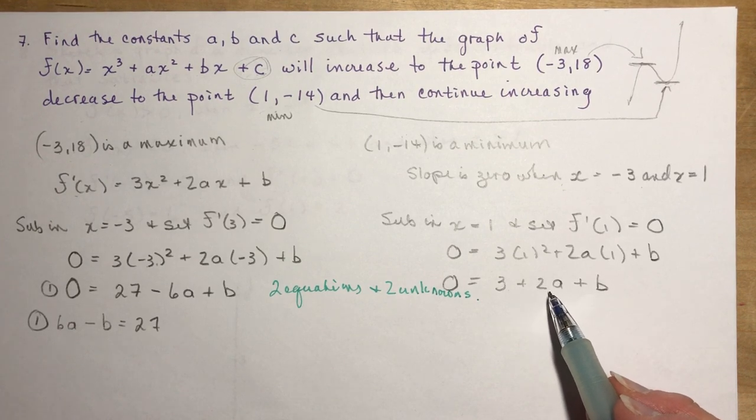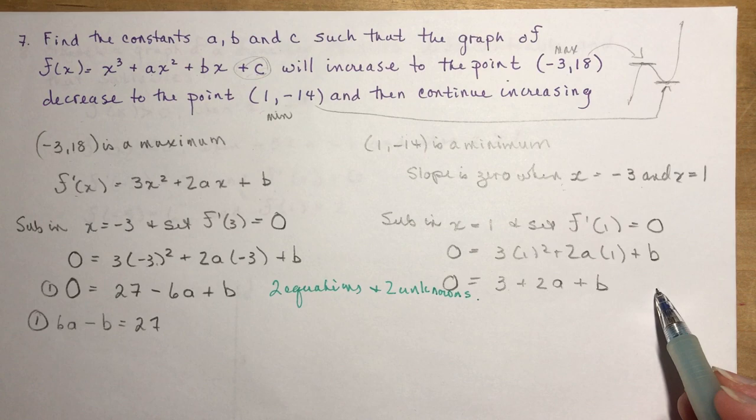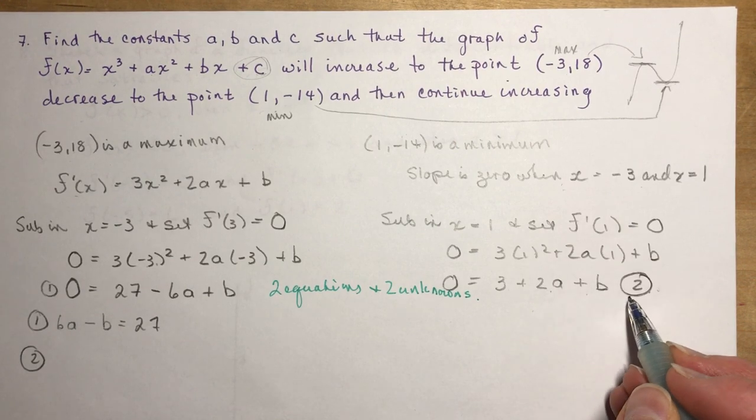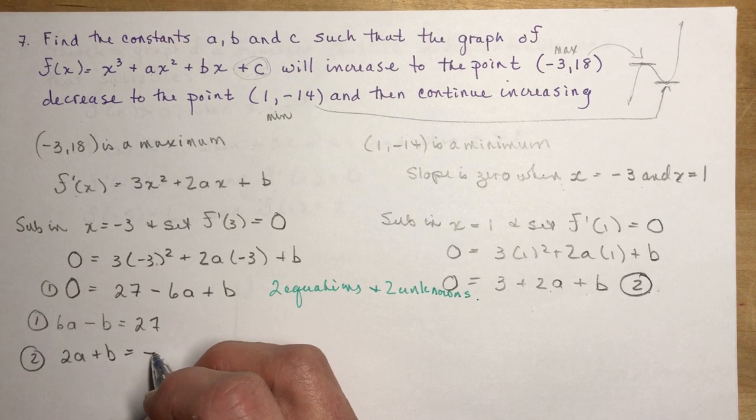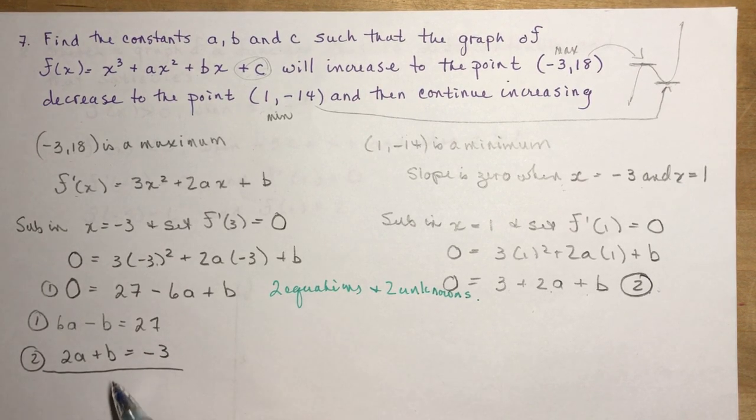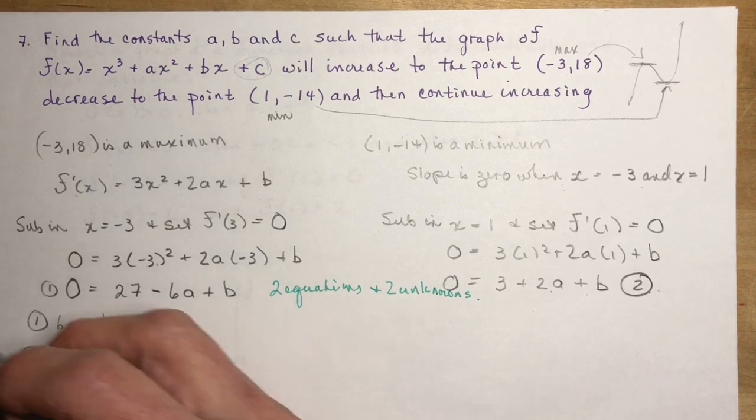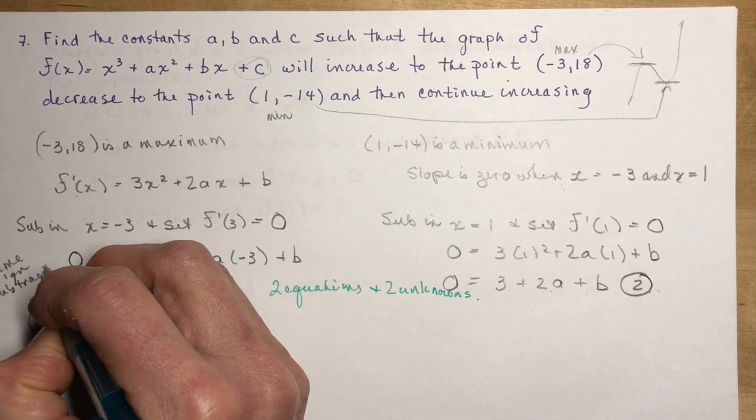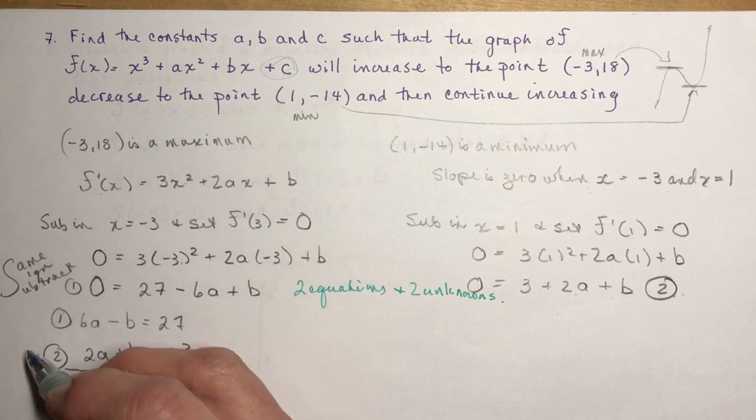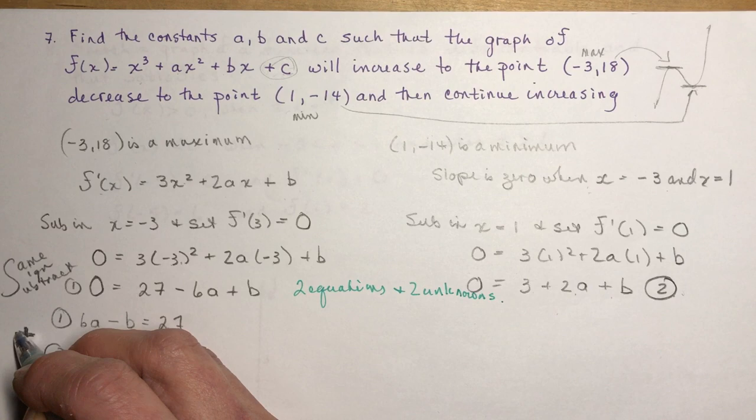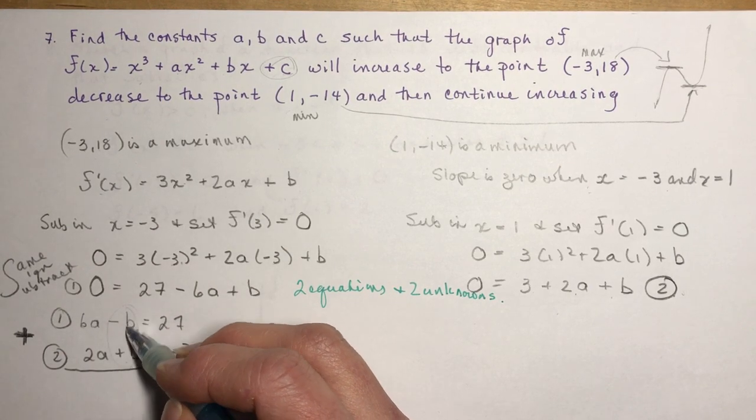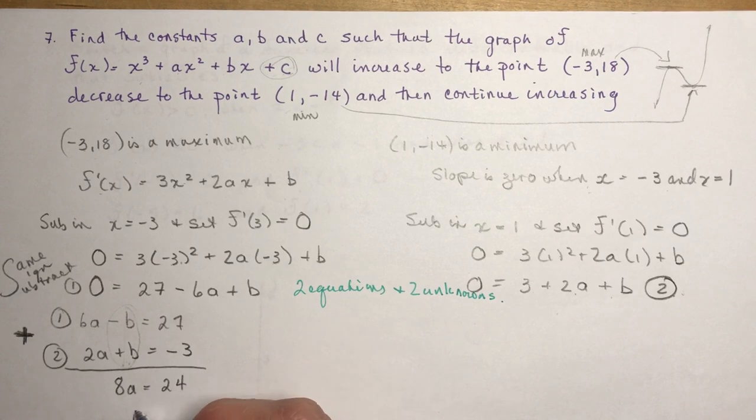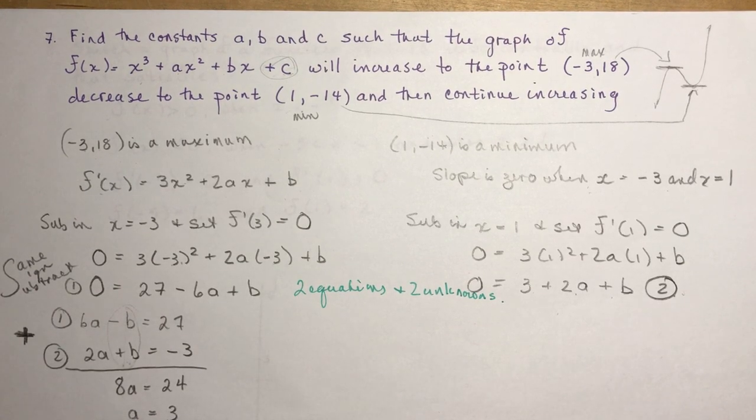Now look at that. How do you do elimination on this? Well, the signs are different. In grade 10, I would have said if it has the same sign, you subtract. But they don't have the same sign. They have different signs. A minus and a plus. So if I add these two equations together, hopefully you remember this from grade 10, I get rid of the b's. I've eliminated them. And I have 8a = 24. So I divide by 8 and I get a = 3.